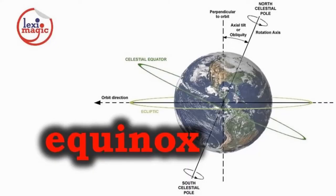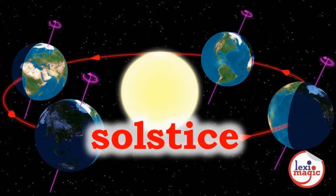Equinox refers to the two days in the year when the nights and days are of equal length. This happens at the time the sun crosses the celestial equator. Solstice refers to either of the two days in a year when the sun is farthest from the celestial equator.